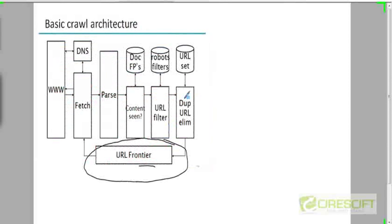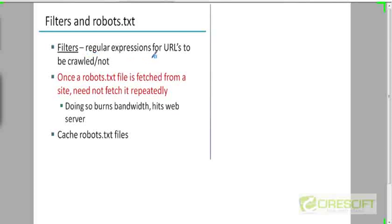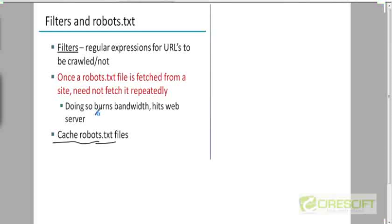The URL filter is a set of regular expressions that the URL must satisfy in order to be crawled or not crawled. Once you fetch a robots.txt file from a particular server, you don't have to fetch it repeatedly for future pages from that server — just cache it and keep looking it up. Fetching robots.txt for every URL would waste processing power and bombard the web server with unnecessary requests.